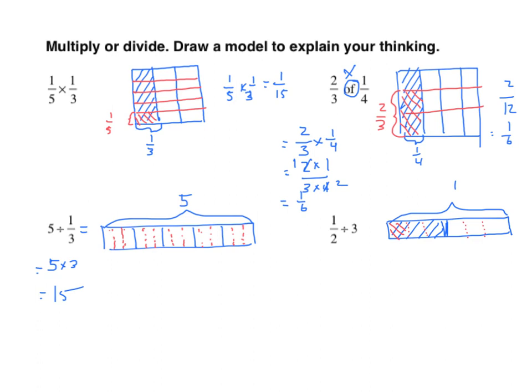Let's do the algorithm. I have one-half divided by three. That becomes three out of six — three-sixths divided by three. That's easy enough because three-sixths divided by three equals one-sixth. So there's a quick review of some of the modeling we have to do.